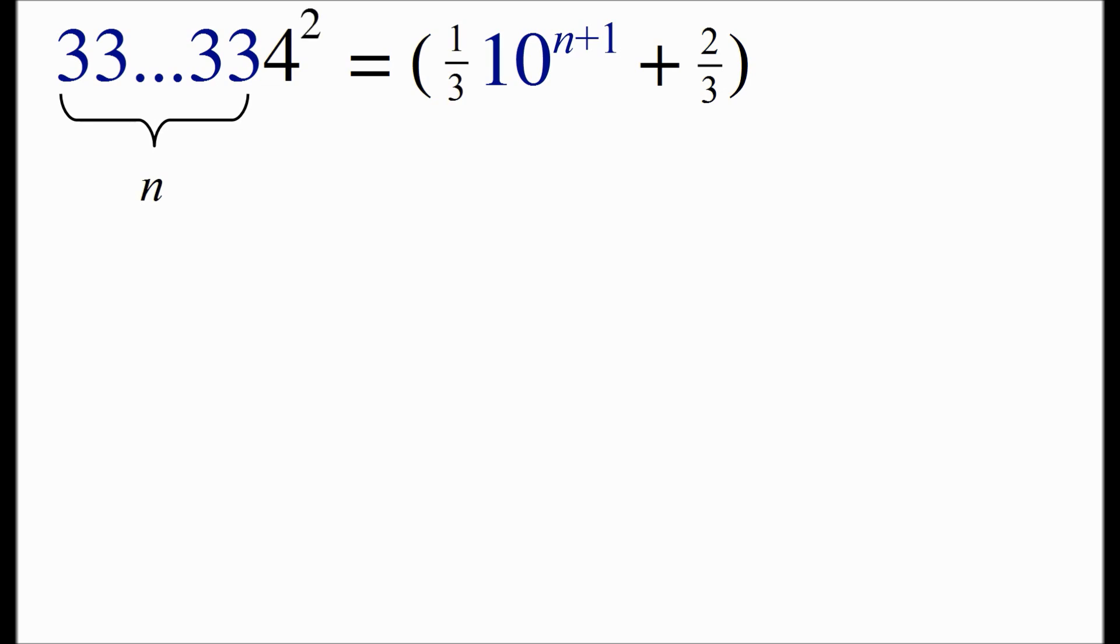We want to calculate the square of this number. So on the right-hand side, we're going to square what's in the parentheses. And we end up with three terms. We have 1 ninth times 10 to the power of 2n plus 2. We have 4 ninths times 10 to the n plus 1. And then we have a final term of 4 ninths.